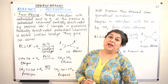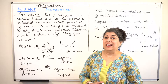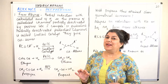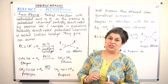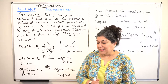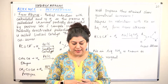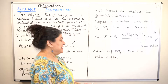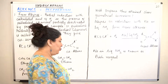We can prepare alkenes from alkynes by addition of hydrogen. Let's see what an alkene is like and how pi bonds are formed.